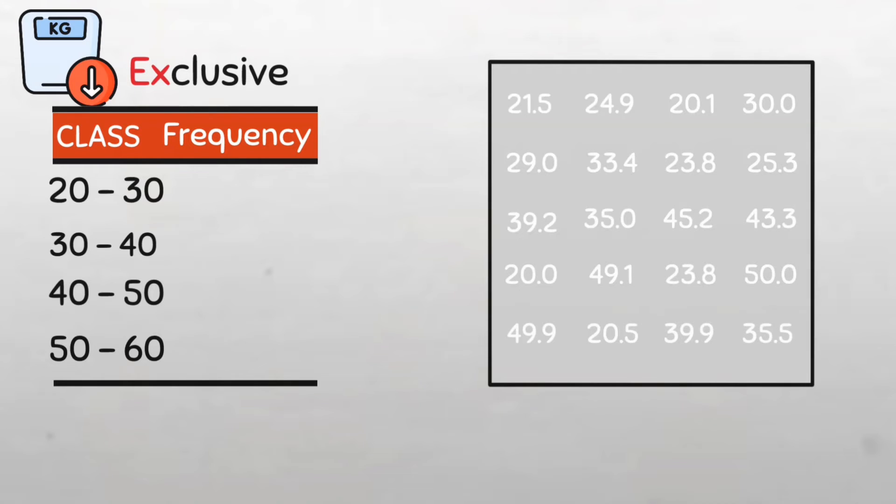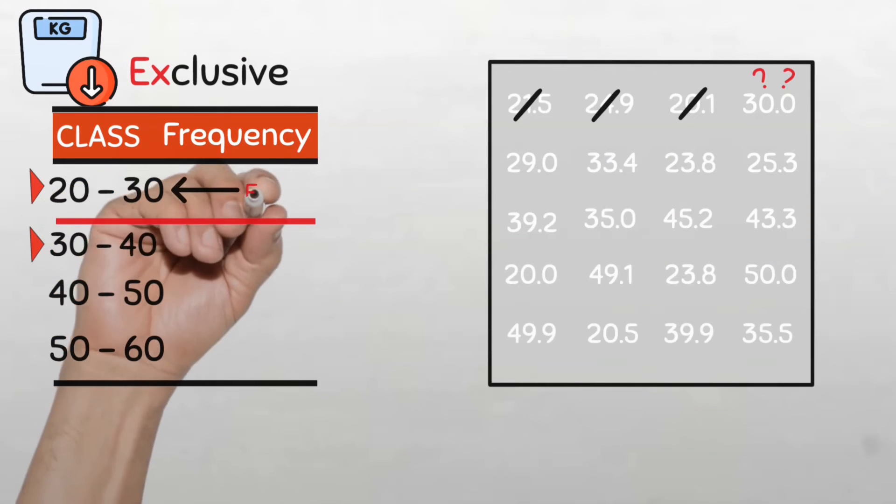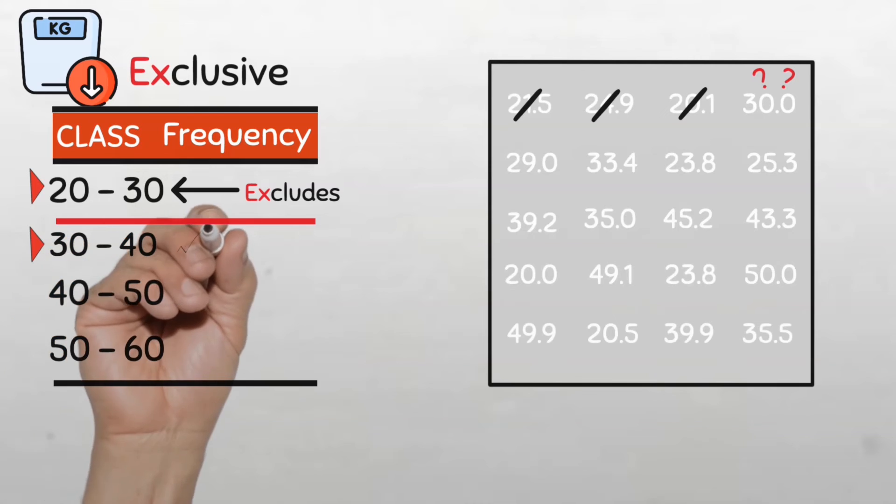For example, our data for the weight of children could be classified using the exclusive type as 20 to 30, 30 to 40 and 40 to 50. So here we can see that there is no gap between the classes. So let's create the group frequency distribution. For the first class, 21.5 will go, then 24.9 yes, 20.1 yes. But then which class do we put this kid with a weight of 30 kg? In the 20 to 30 kg class or in the 30 to 40 kg class?